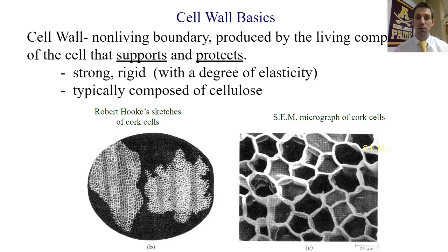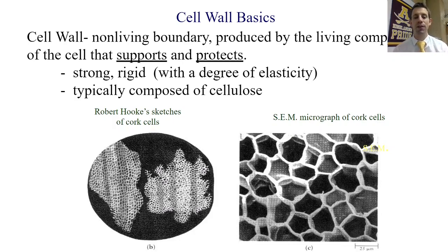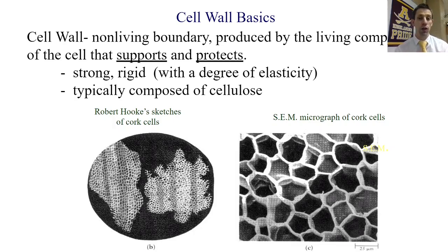Cellulose is the main component that makes up plant cell walls and gives them their strength. There is also a degree of elasticity to it — you've probably noticed that a leaf can bend, and trees sway in the wind. It's not so rigid that it breaks as soon as it starts to bend; there is some give to the cellulose in plant cell walls.